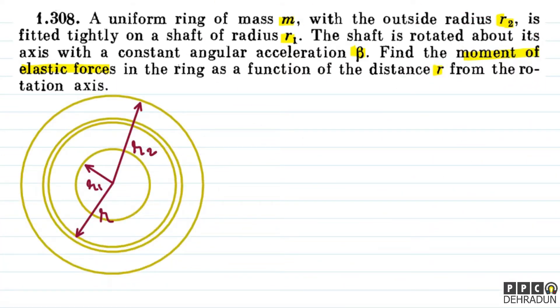So, what has been given in this question? A uniform ring which has a mass m, its outside radius r2 and it is tightly fitted on a shaft whose radius is r1. So, we can call the inner radius r1. Now, this shaft is rotated with a constant angular acceleration beta. Now, what have we been asked? Moment of elastic forces - we mean torque - in the ring as a function of the distance small r from the rotation axis. So, as I have shown in the diagram, I'm going to a radial distance r and selecting a ring of thickness dr.